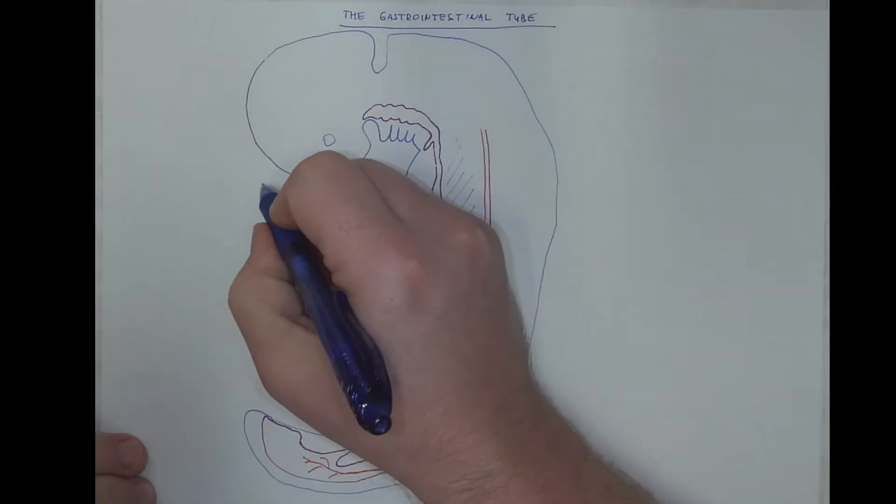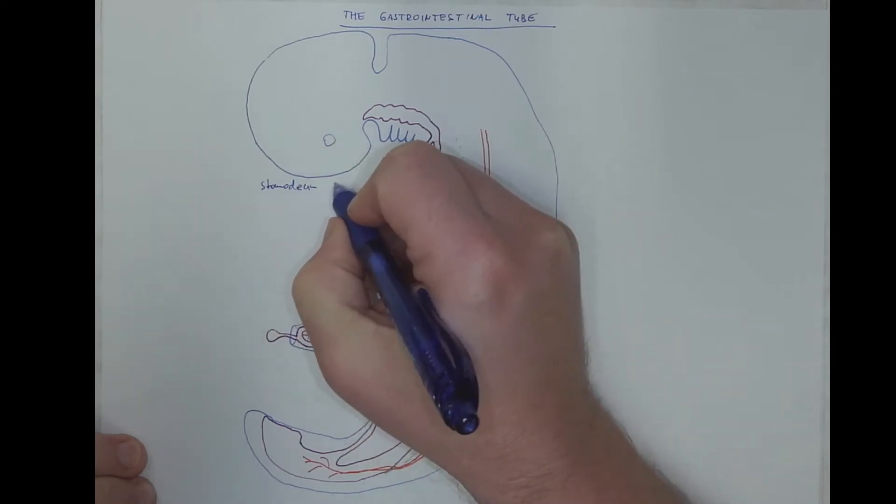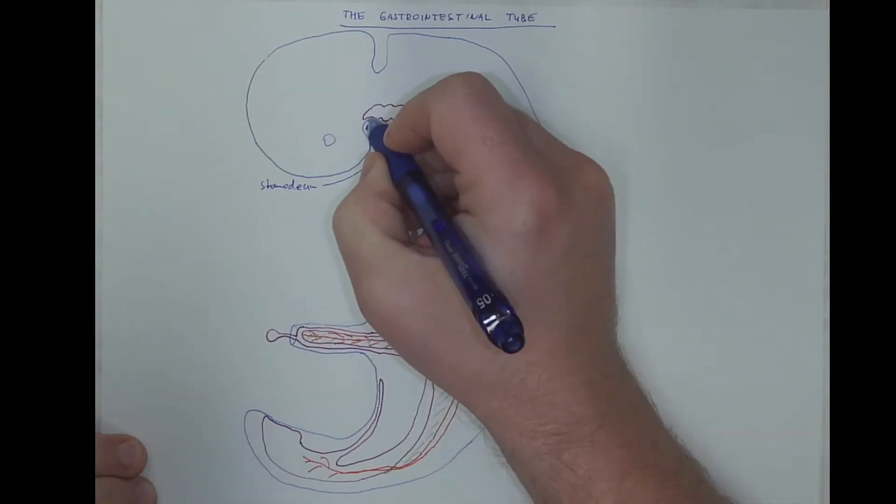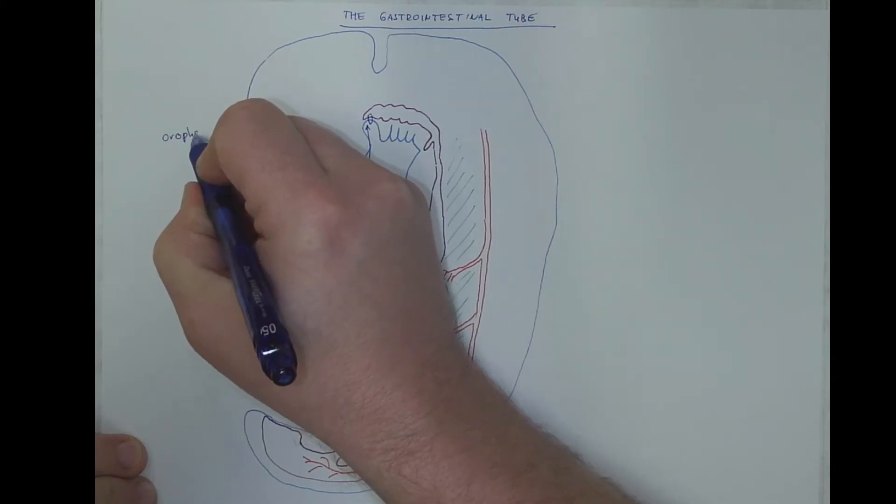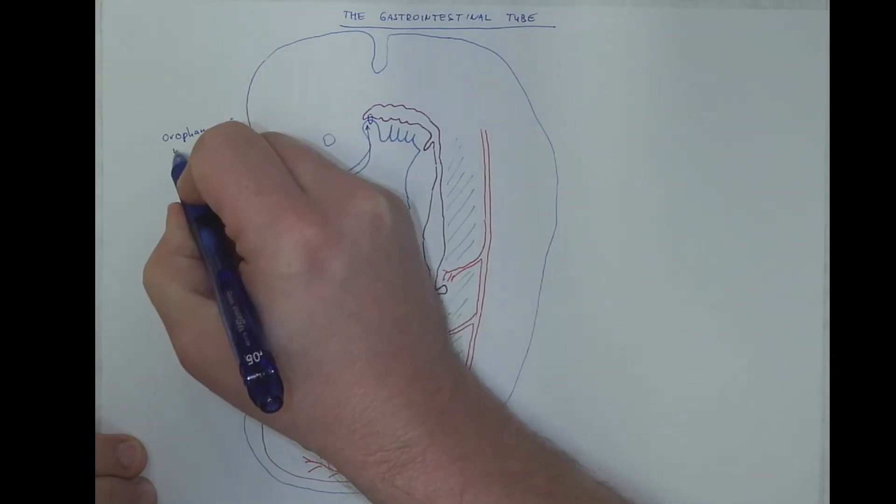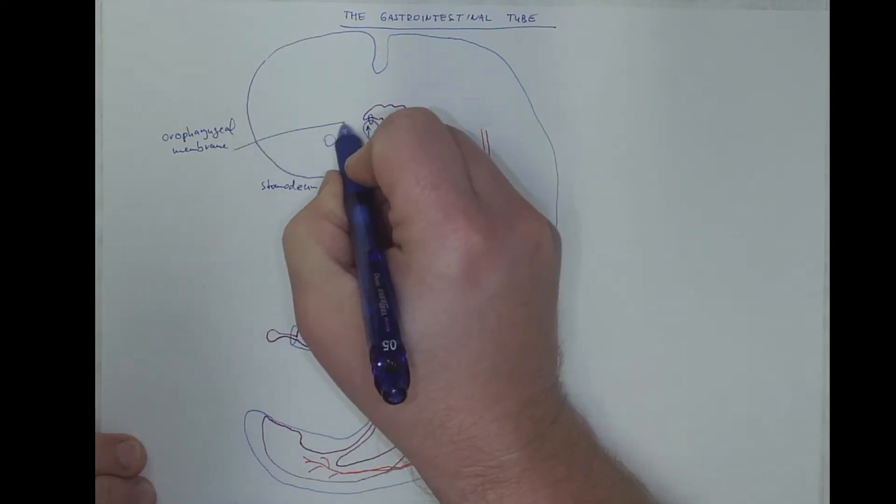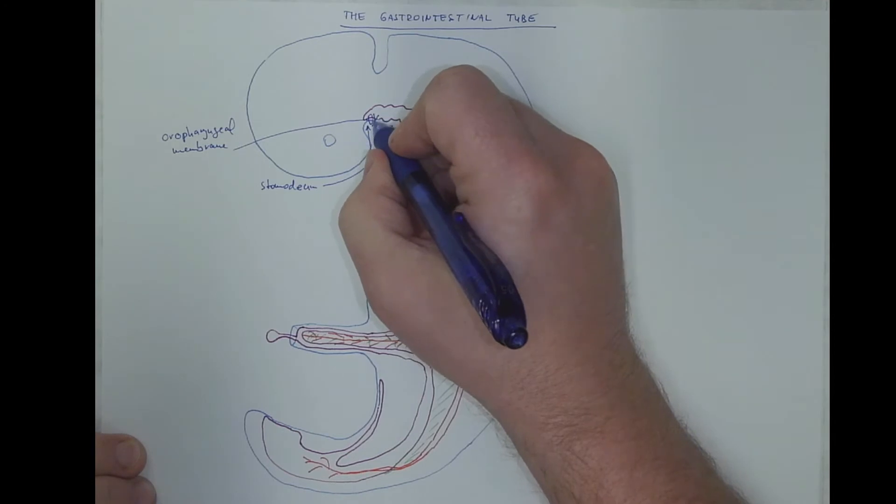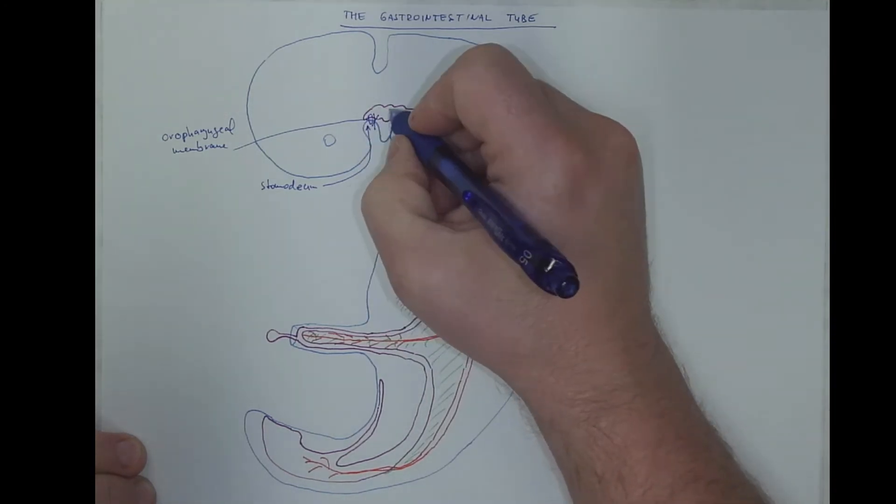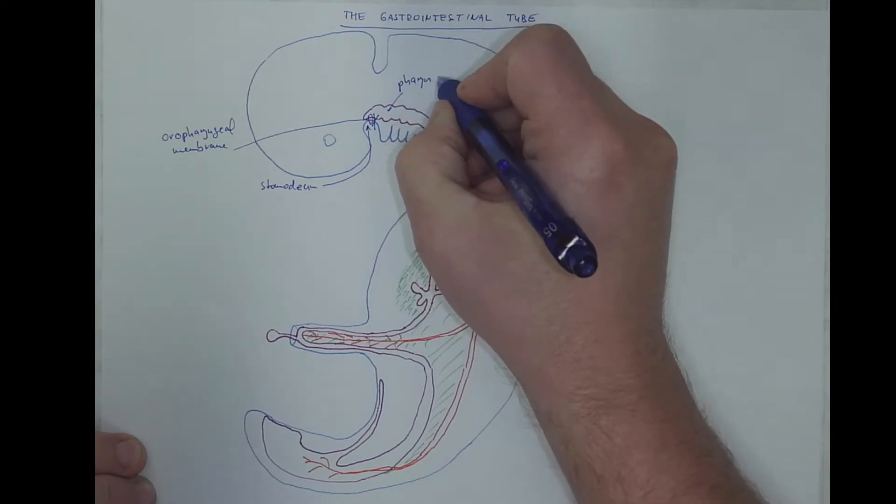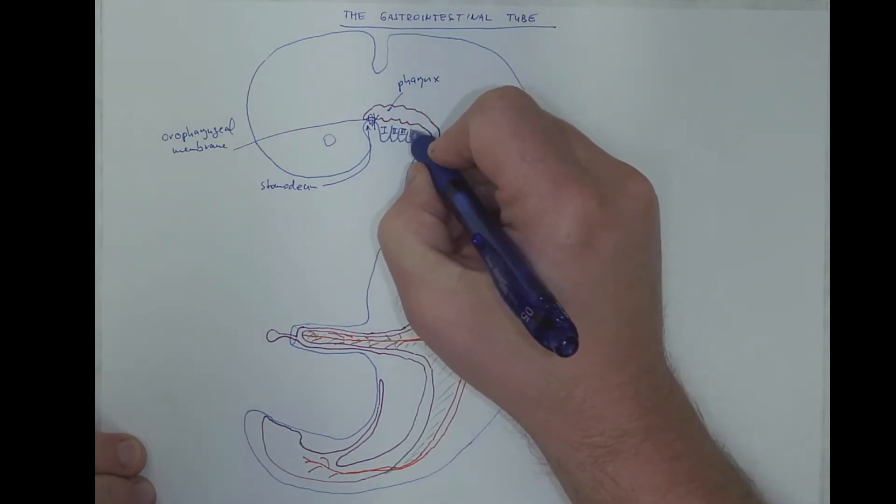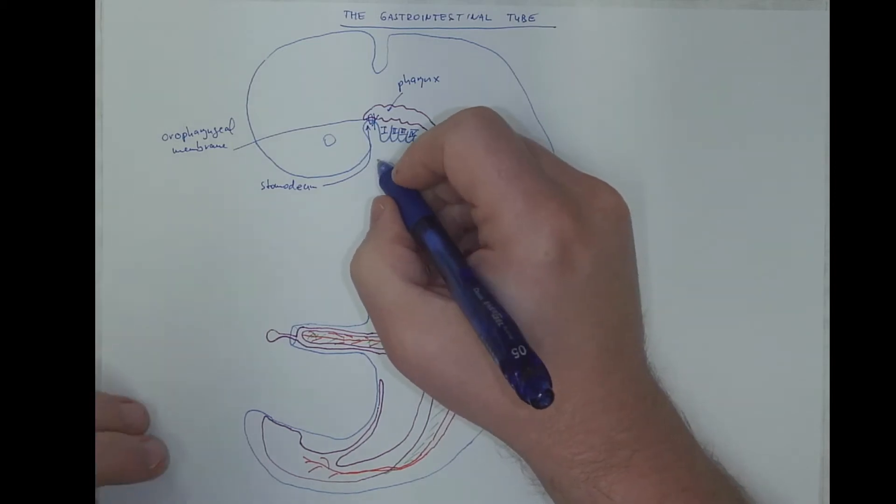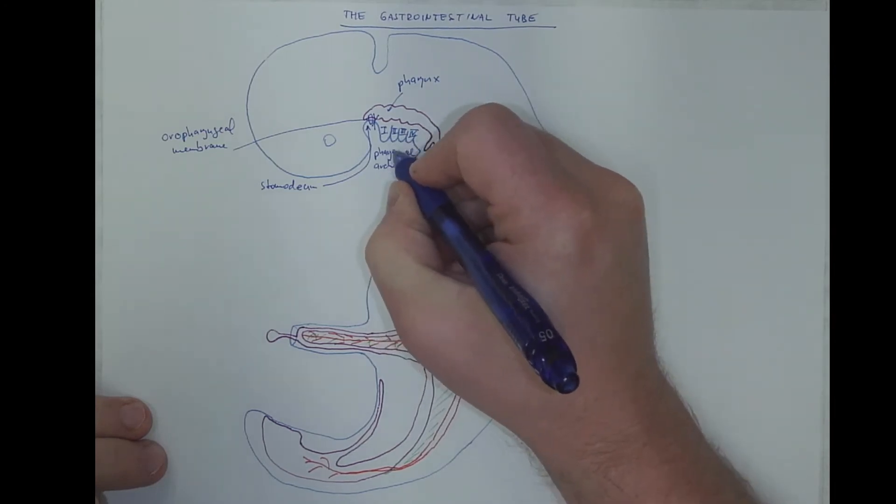We got the ectodermal stomodium, which is temporarily separated from the pharynx via the oropharyngeal membrane, that will be perforated. Then we got the pharynx, lined with the endoderm, the pharyngeal arches, the first, second, third, fourth, that are visible here.